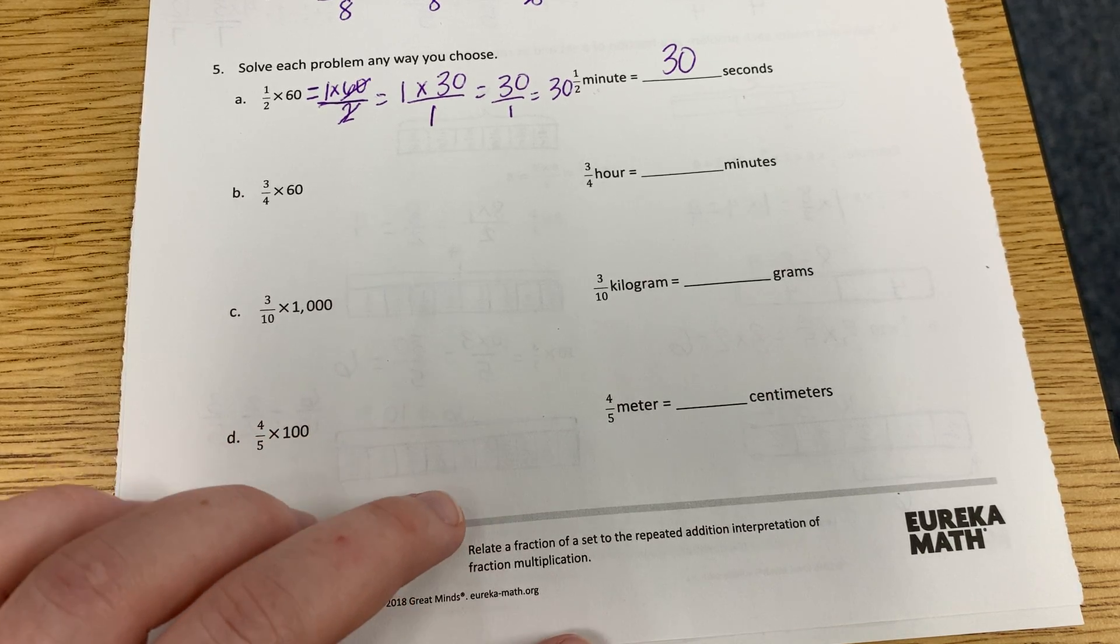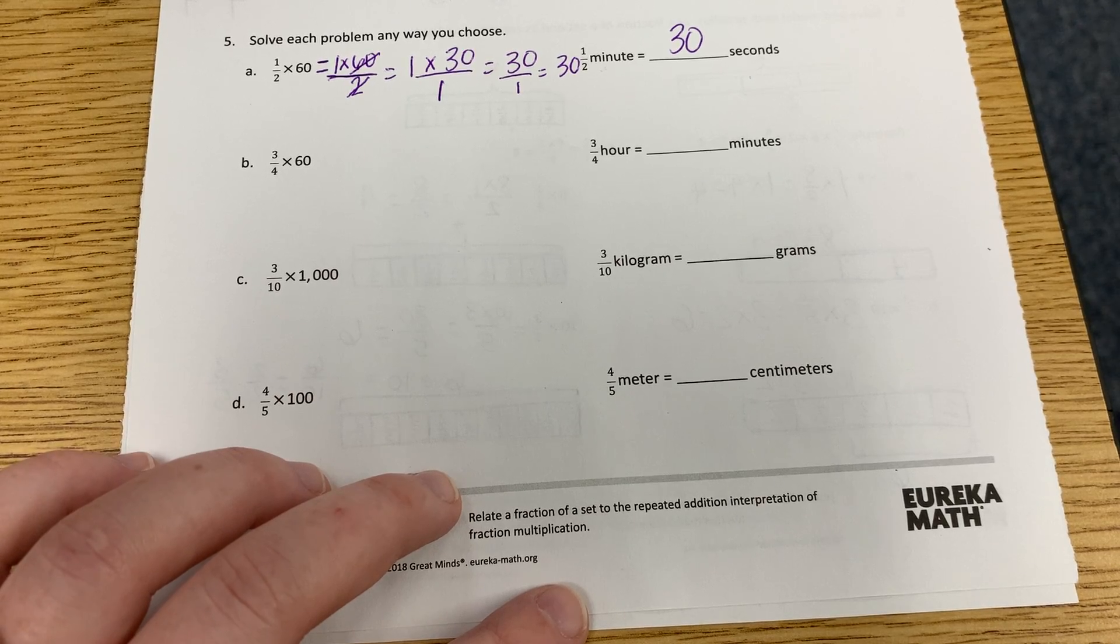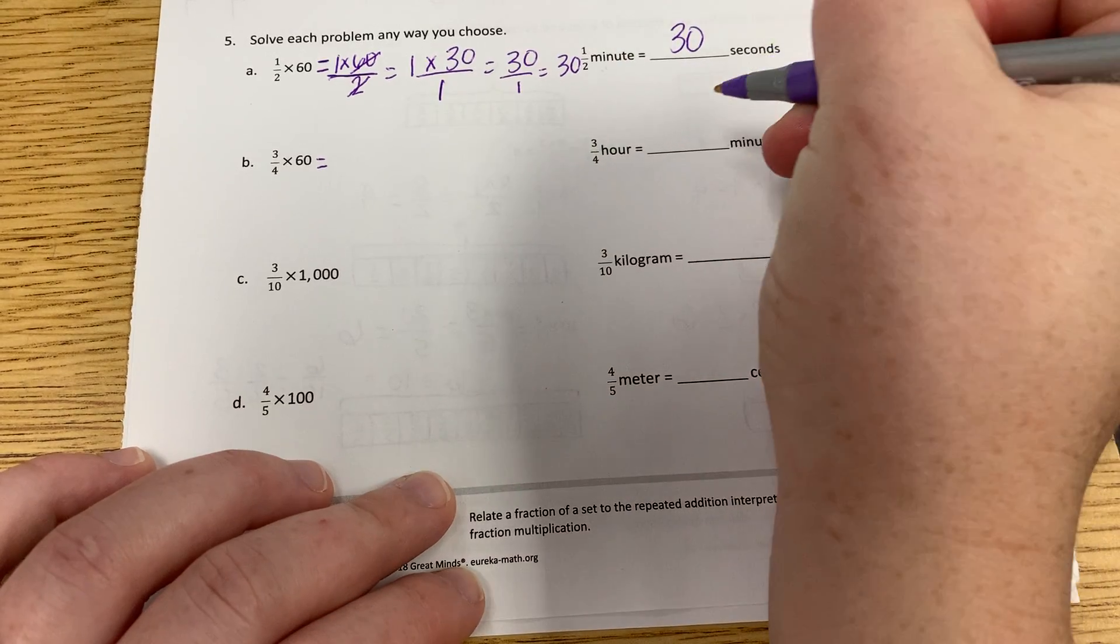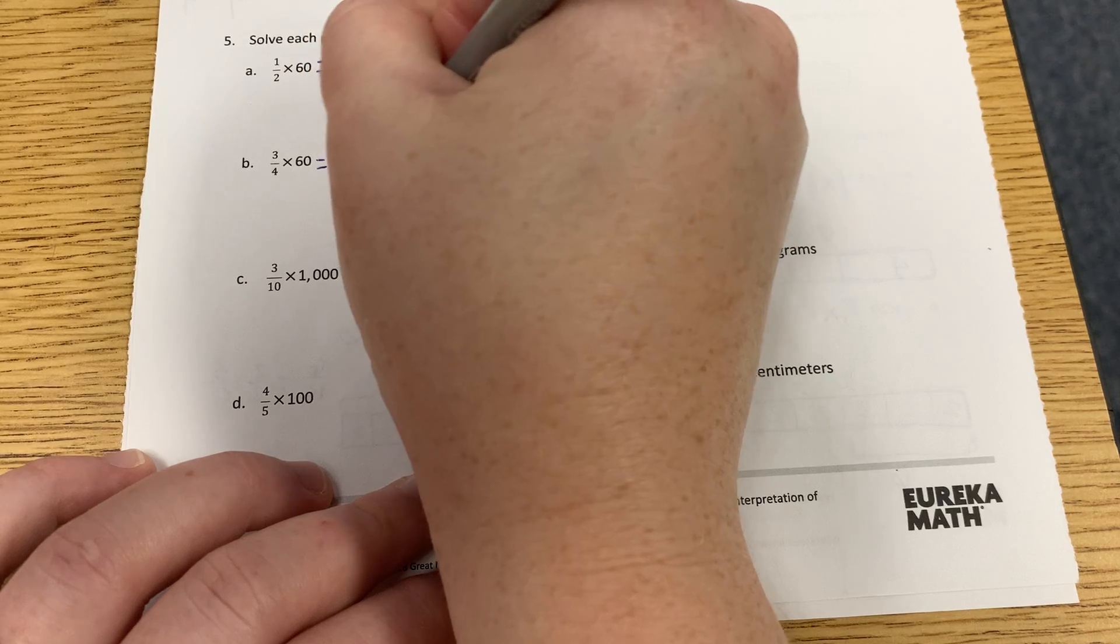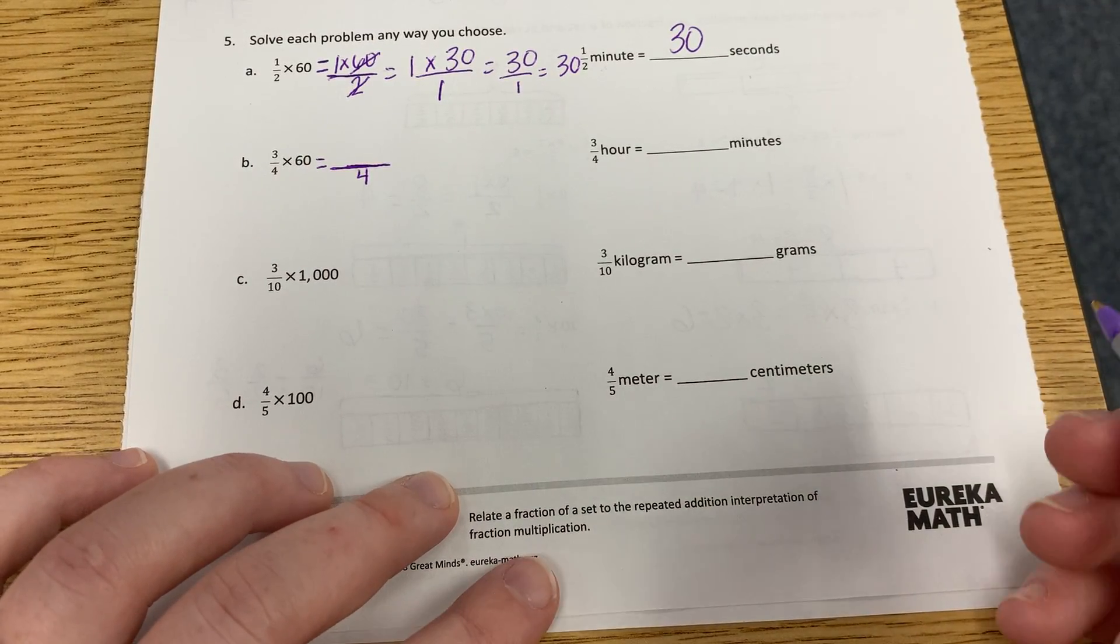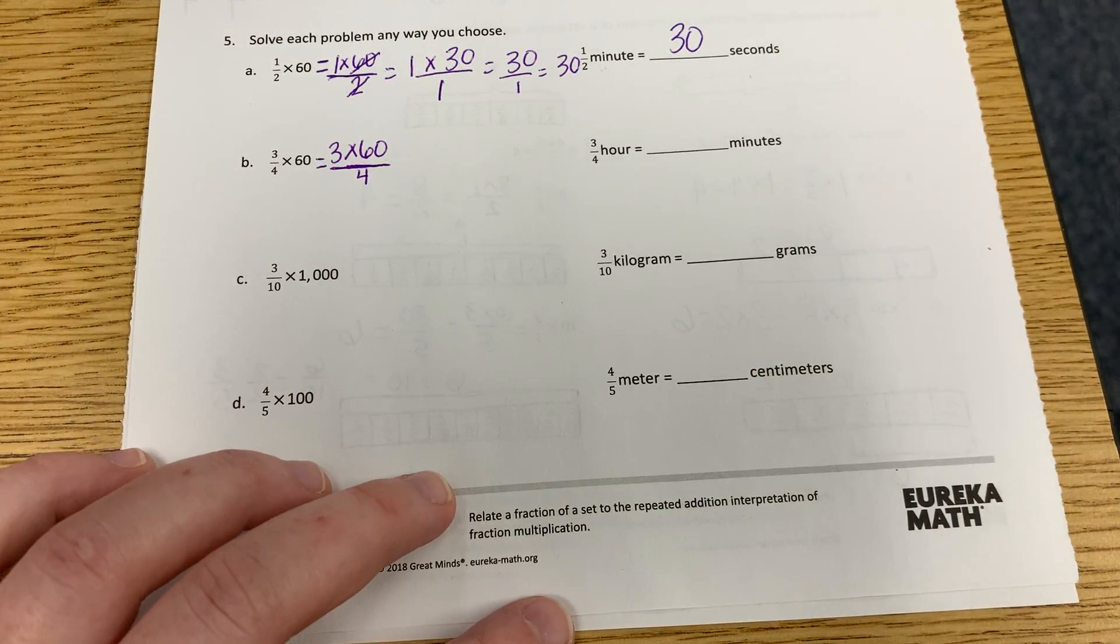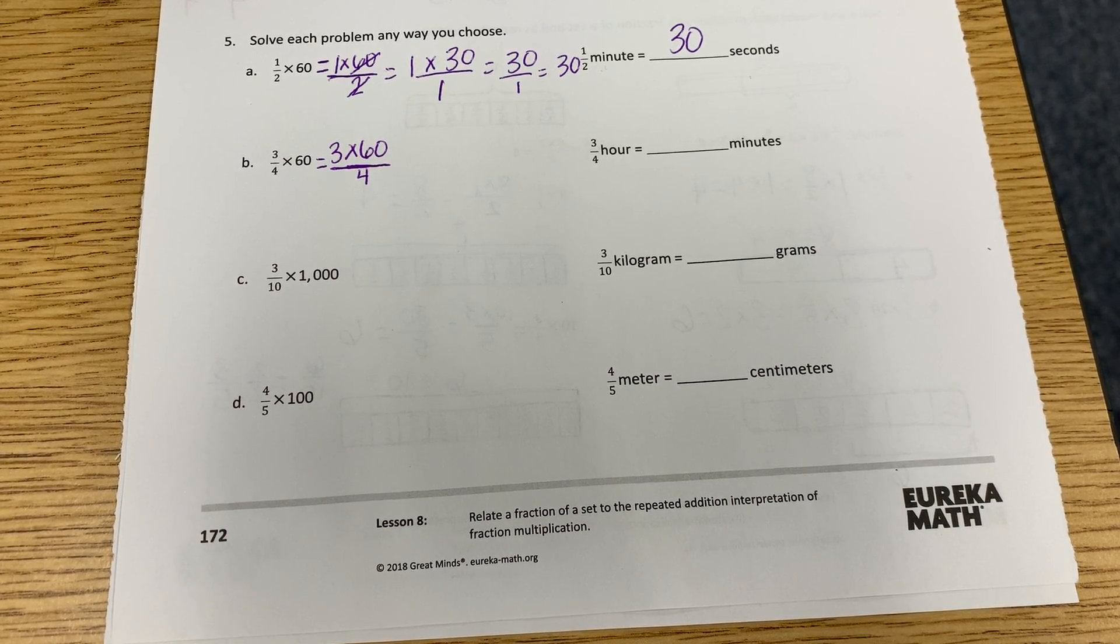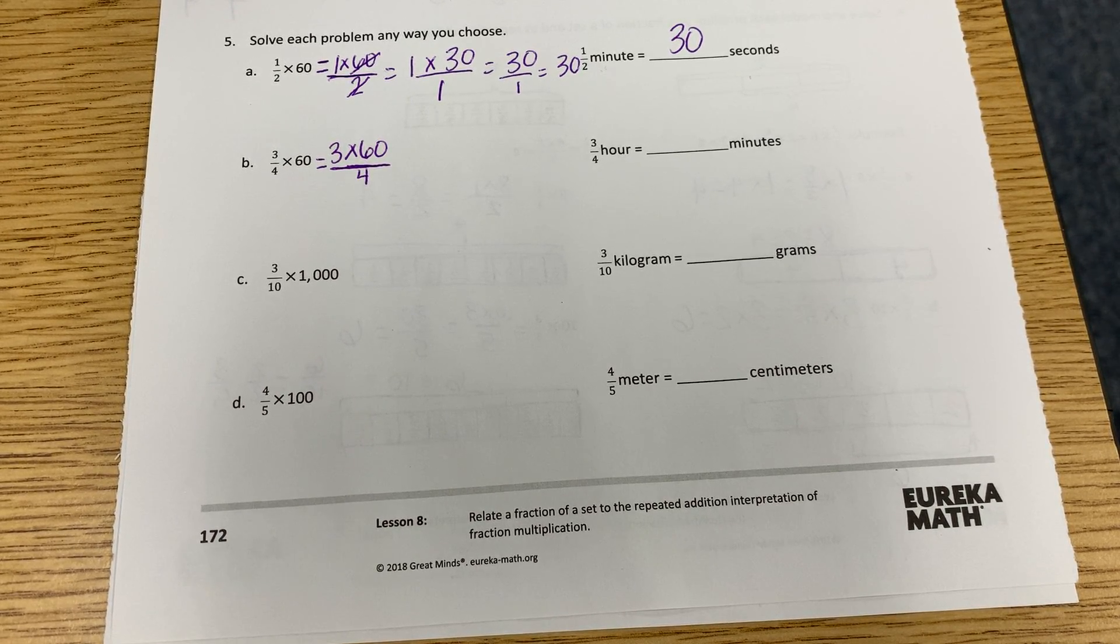Okay, now, number two or letter B, it says three fourths times 60. Well, again, we keep our denominator the same. So it's going to be what? Four. And what is our numerator equation? What is that equation going to be on the top, Carter? Three times 60. Very good. Okay. Now, Colt, you with me?